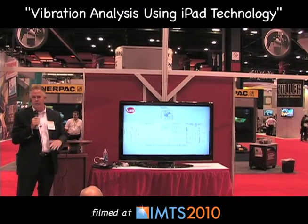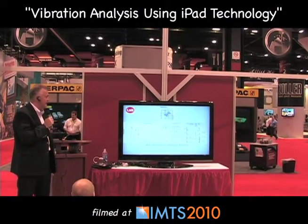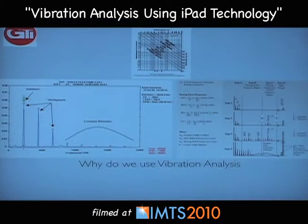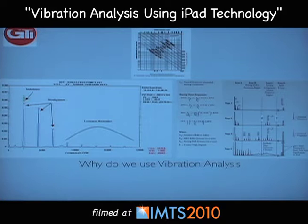Why do we use vibration analysis and what is it all about? Vibration analysis has been used for many years in the machine tool industry. Moving components break down, and we need to take information from the vibration that comes out of these units as they're rotating and moving to find out when they're going to fail. When we know a machine is going to fail, we can procure parts and have the bearings ahead of time, ensuring downtime is cut down to a minimum.